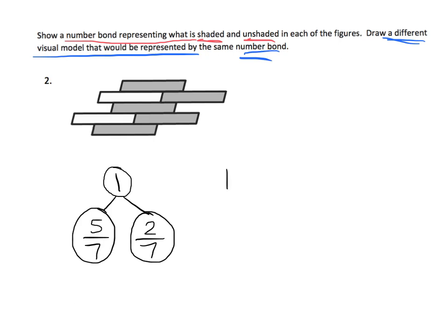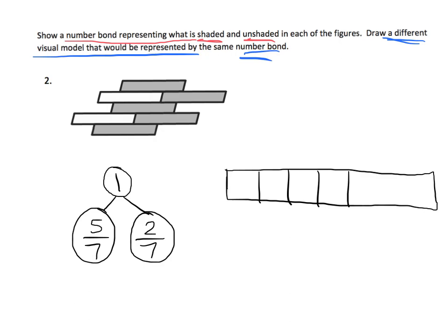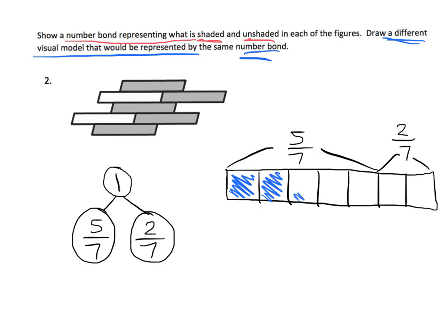I'll do a tape diagram. We have to cut this into seven equal size pieces because that's what the denominator says: one, two, three, four, five, six, seven. We're going to draw the five sevenths — one, two, three, four, five — and here is the two sevenths. We're going to shade in five sevenths and leave unshaded the two sevenths.